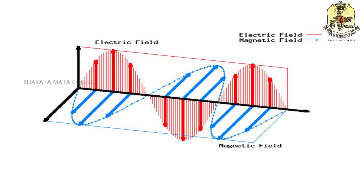We all know that light is an electromagnetic wave. That means the electric field vector and magnetic field vectors are perpendicular to each other and perpendicular to the direction of propagation of the wave. We also know that light waves have dual nature — particle nature and wave nature. The wave nature of light was established from the theory of interference and diffraction, but this theory does not tell us the nature of the wave, that is whether it is longitudinal or transverse.